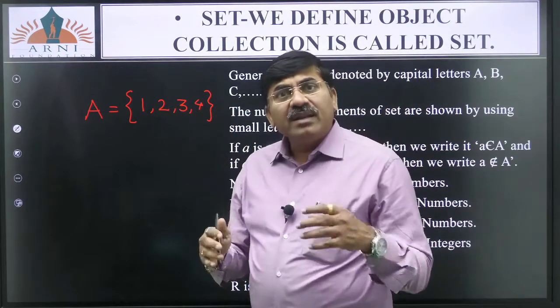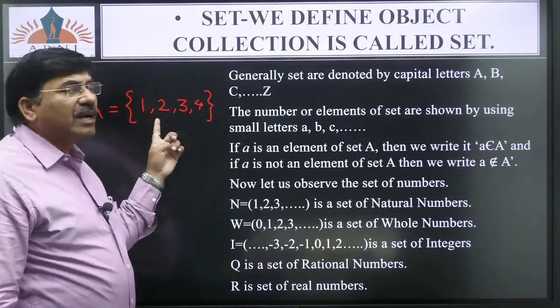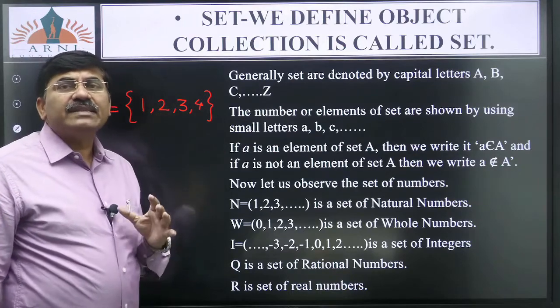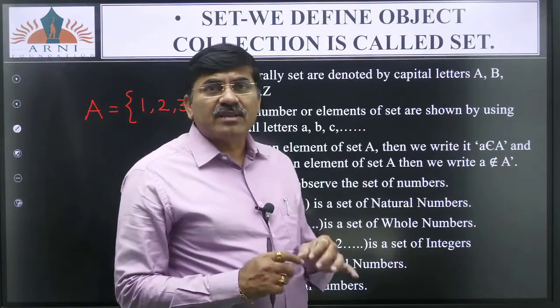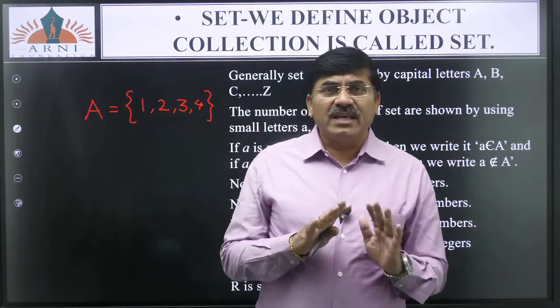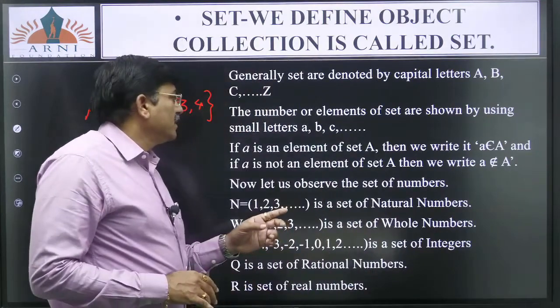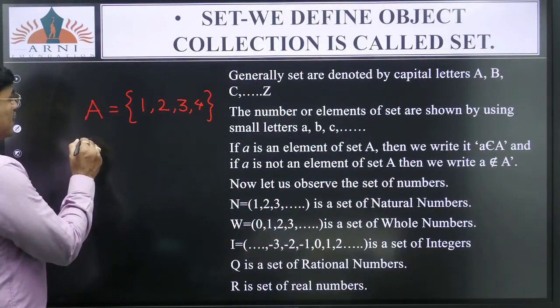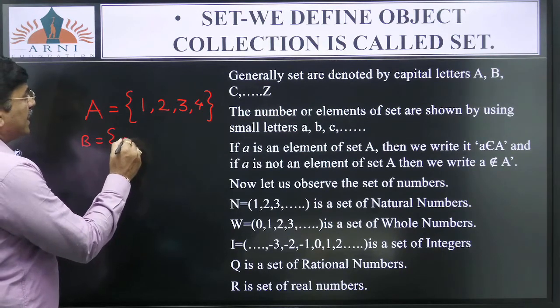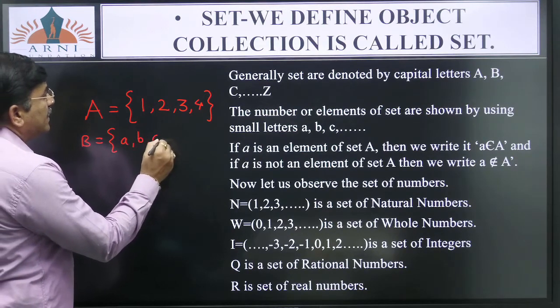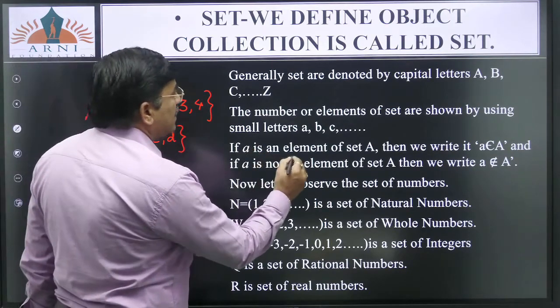Tjala panza curly bracket madhe lilas 1, 2, 3, 4. Ek object ek daajar lila set chaat madhe. And the elements. And suppose this is B, B is equal to something like this A, B, C, D. So these are called as elements of the set. So this is the element.